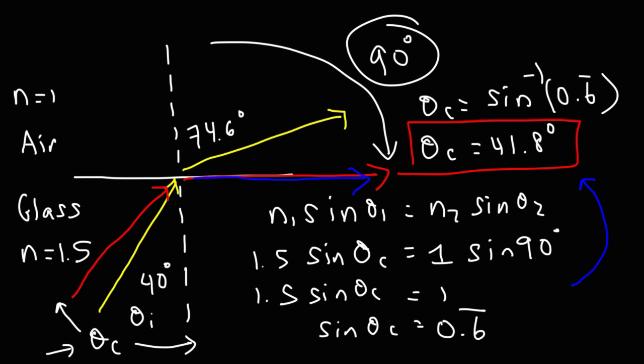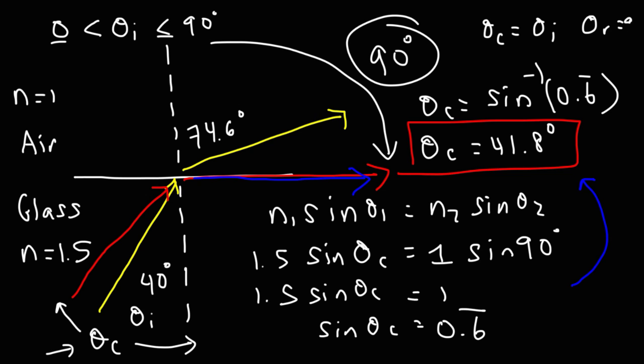That's basically it for this video. Hopefully it improves your understanding of the refraction of light and how to calculate the incident angle, the critical angle, or the refracted angle. Keep in mind the incident angle can be anything between 0 and 90 degrees, but the critical angle is a specific incident angle where the refracted angle equals exactly 90 degrees — it can only take on one value.